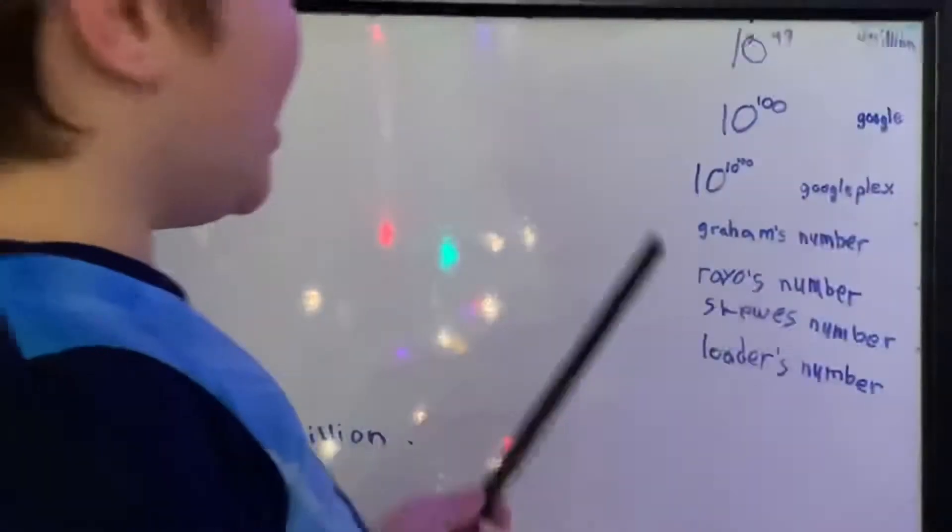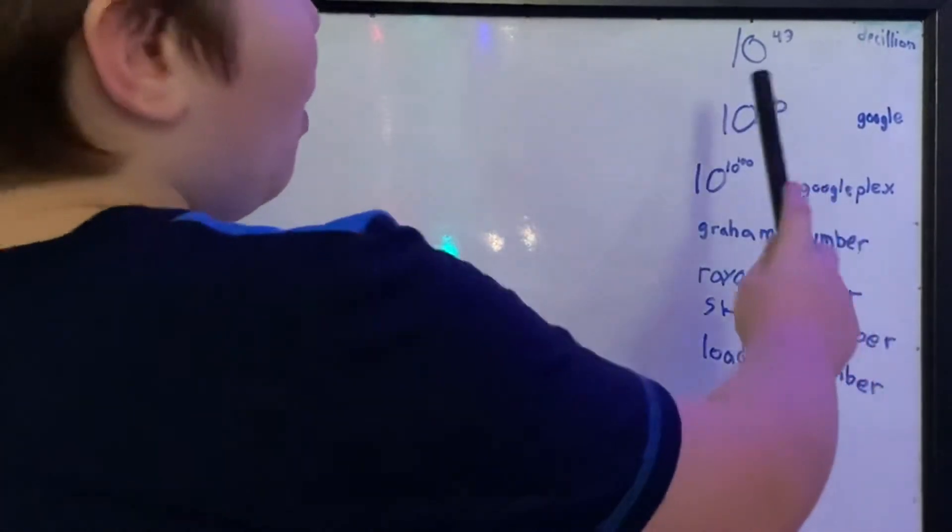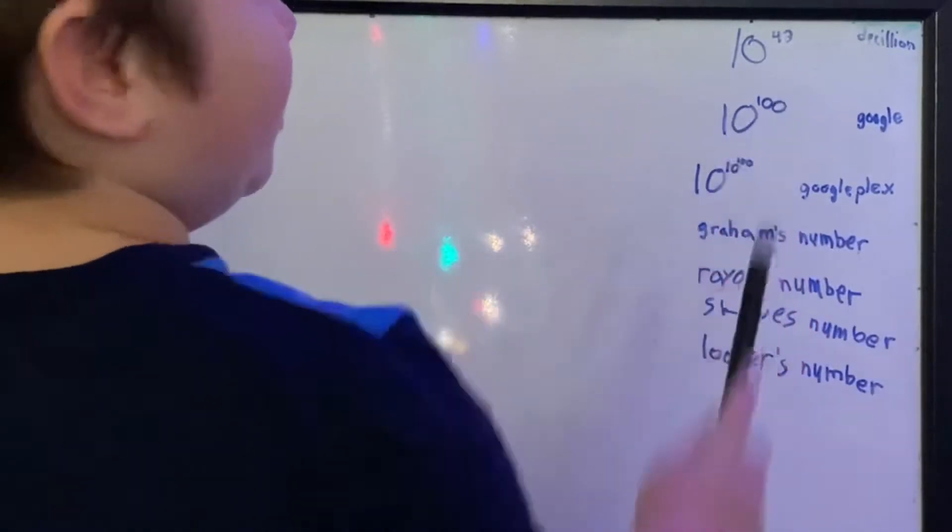So, if we had to write Google, we would have to write 1 with 100 zeros in it.